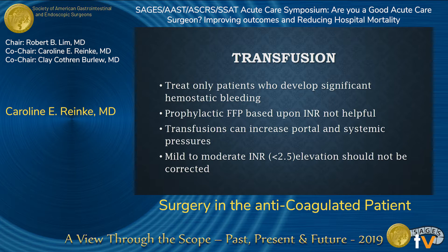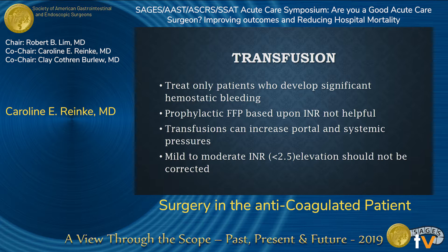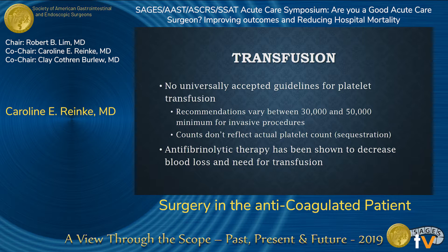The goals for transfusion in these patients are to treat only those patients who develop significant hemostatic bleeding. If you see bleeding that's not surgical, that's the time to try to treat them. Prophylactic FFP based on INR value is not helpful, and giving a lot of volume can increase portal and systemic pressures. You shouldn't treat an INR less than 2.5 without any evidence of bleeding. There are no universally accepted guidelines for platelet transfusion; recommendations vary between 30,000 and 50,000 for invasive procedures. If you need to give a patient platelets to go to the OR, you can give them a unit and proceed without waiting for counts to respond.